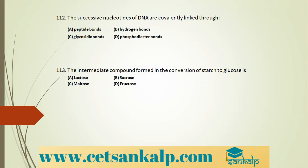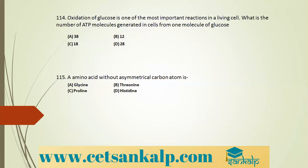Q: Intermediate in conversion of starch to glucose. Starch is first converted to maltose by diastase enzyme, then maltose is converted to glucose. Intermediate compound is maltose. Q: Oxidation of glucose in living cells — C6H12O6 + 6O2 → 6CO2 + 6H2O + ATP. The number of ATP molecules generated from one molecule of glucose is 38. Correct option A.